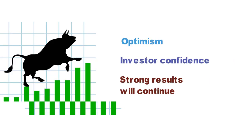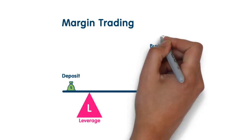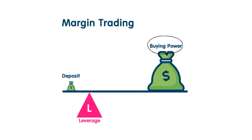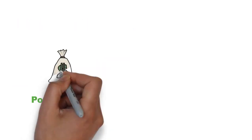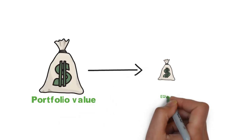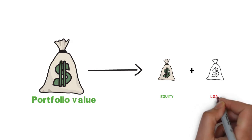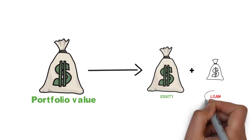As we all know, margin trading involves investing in stocks using your own money, along with the borrowed money from the dealer, that results in additional purchasing power and magnified returns. Your portfolio value will fluctuate as the stock price changes. One important thing to remember is that every time portfolio value changes, it's your equity that increases or decreases. But the borrowed amount will stay the same.